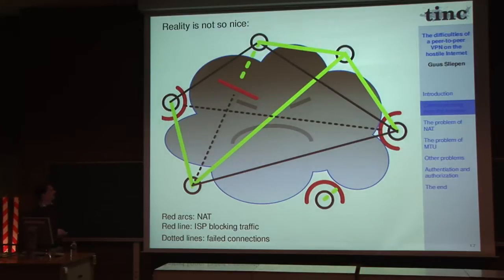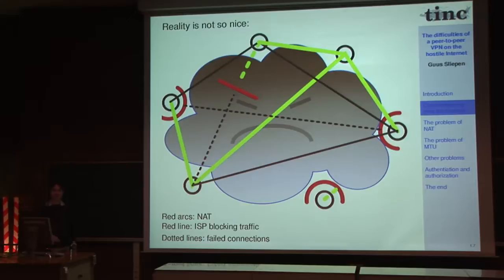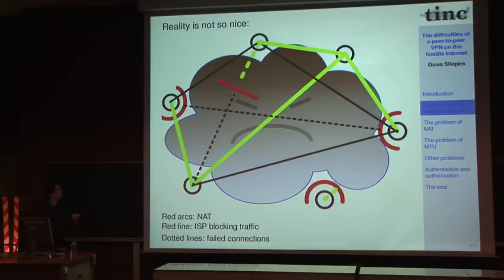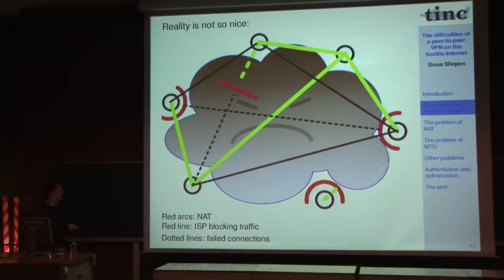Some nodes behind a NAT device can no longer connect directly with each other. You can still route via another path, but more problematic is if a node connects to another node behind a NAT as its initial connection — it will not receive information about where the rest of the network is, leaving it completely disconnected from the VPN. The problem with NAT is that the source address and port change, and incoming connections are blocked.